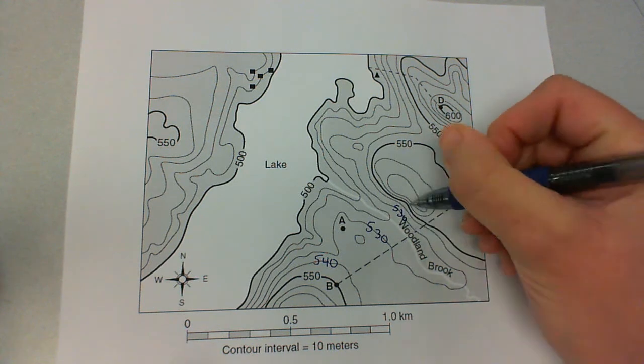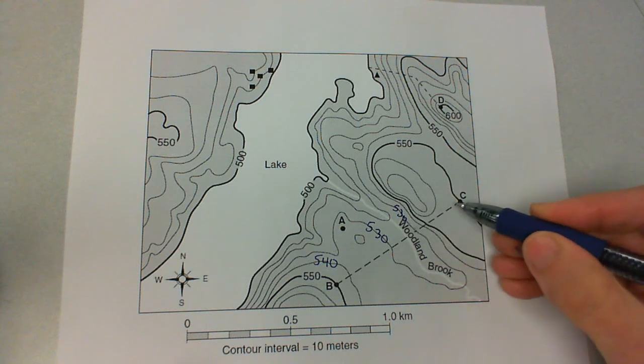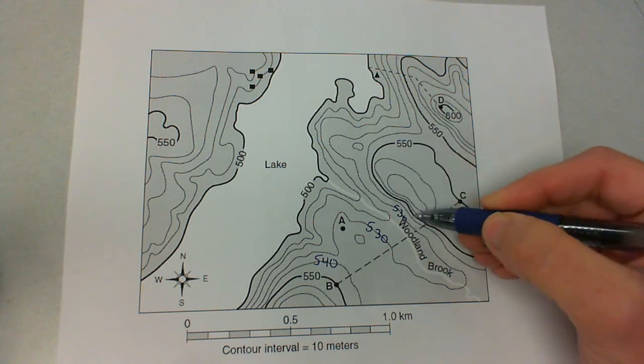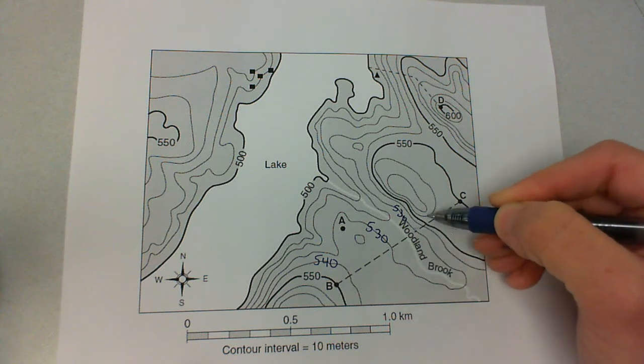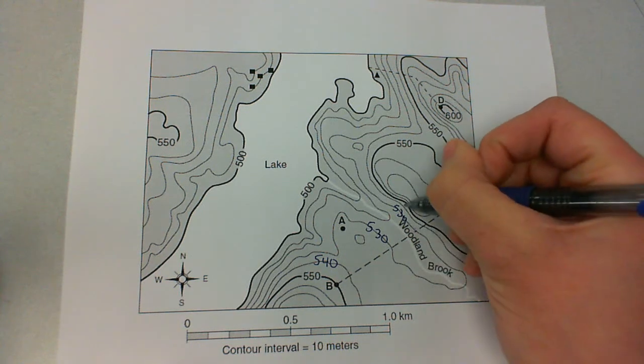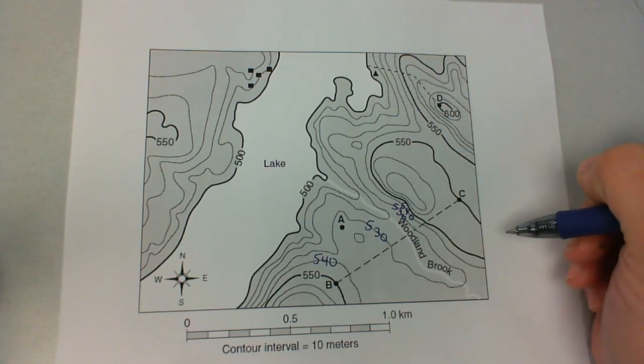It gets kind of tight in here, so try to label it the best you can. But now we're going to start to increase. You can see that this solid line right here is 550. So once we get to the other side of that brook, we're going to increase our elevation. So this next line here is 540. And then that solid line is already labeled as 550.